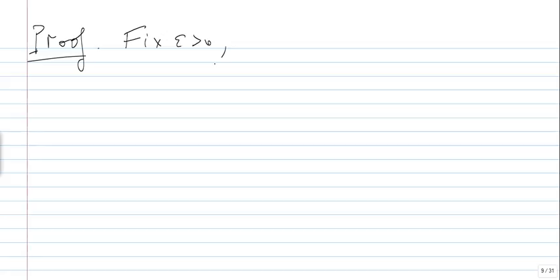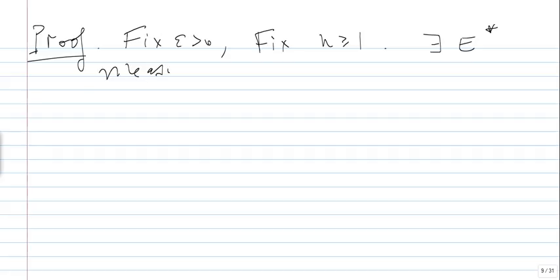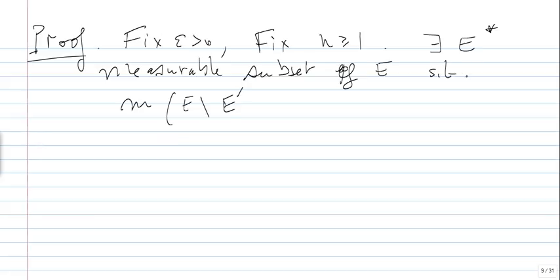How do we prove this? Because the measure of E is finite, the lemma tells us that for every N — fix epsilon — the delta we pick should be small enough. For every N greater than 1, by the lemma there exists a measurable subset E*_N of E such that the measure of E minus E*_N is less than epsilon over 2^(N+1), and there exists N_N such that |F_k(x) - F(x)| less than 1/N for x in E*_N and k greater than N_N.